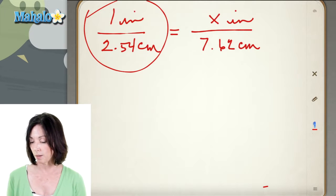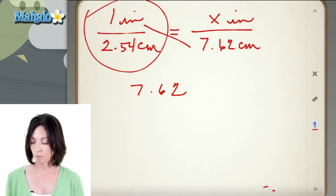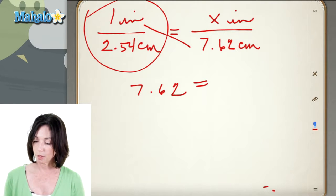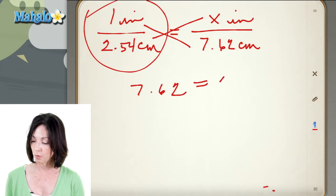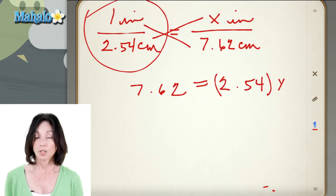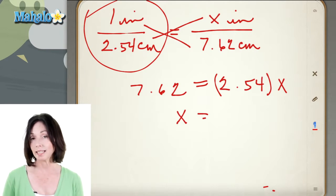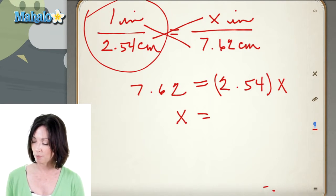Again we're just going to cross multiply. We're going to cross multiply this way. 1 times 7.62 is 7.62, and then we're going to cross multiply this way and we have 2.54 times x. So now to solve for x I just divide both sides of the equation by 2.54, and 7.62 divided by 2.54 happens to be 3. So 3 inches.